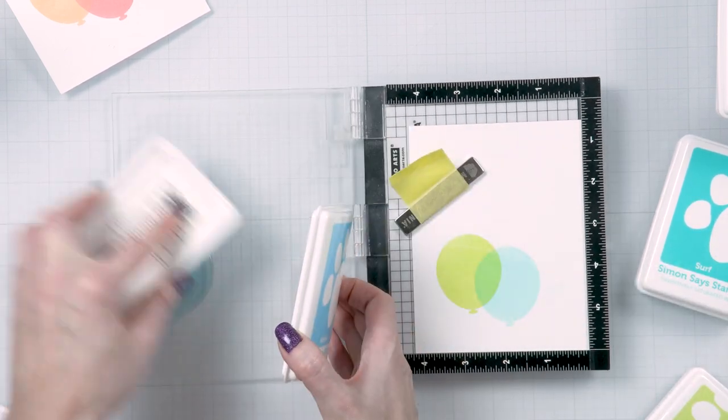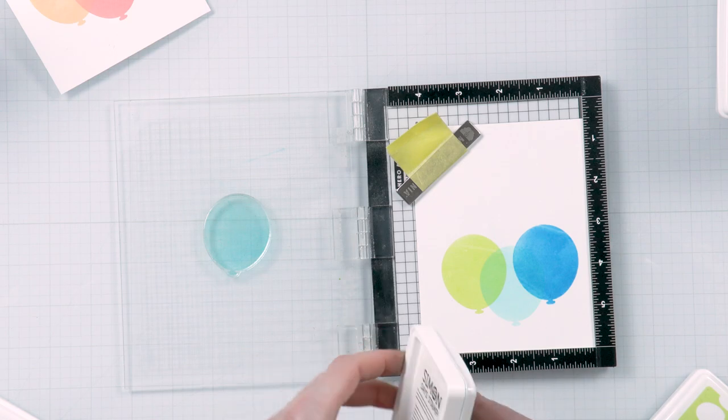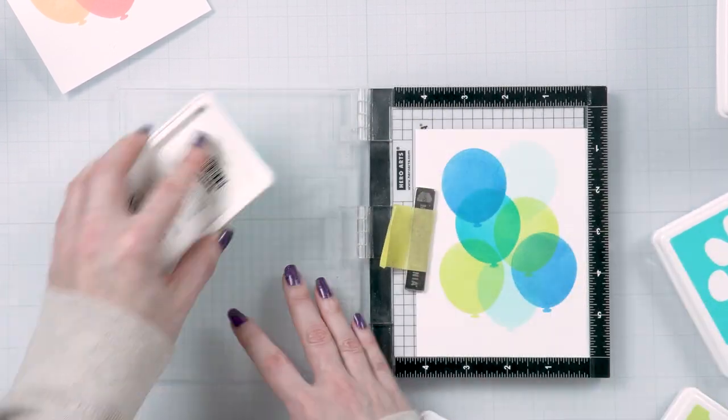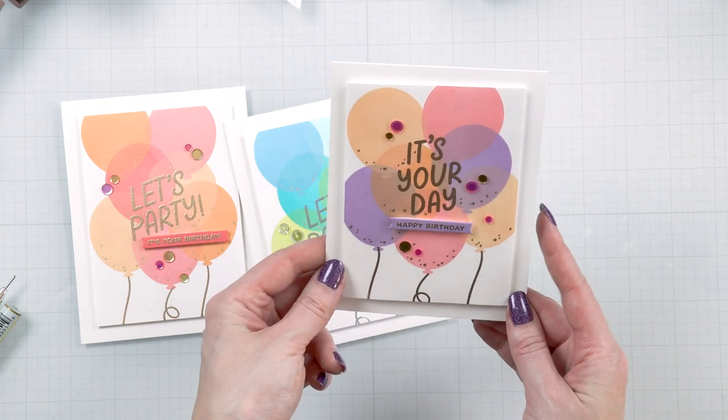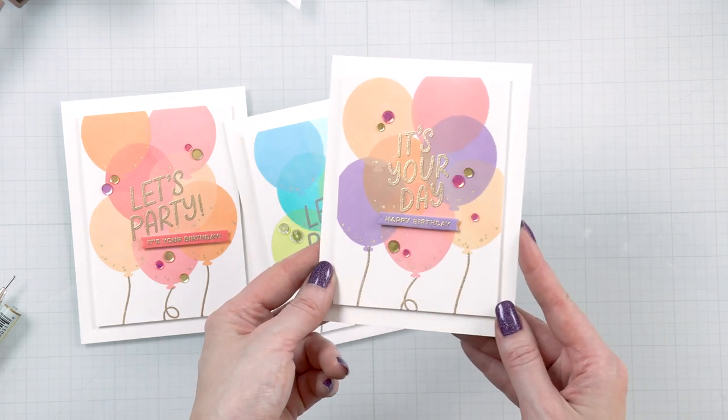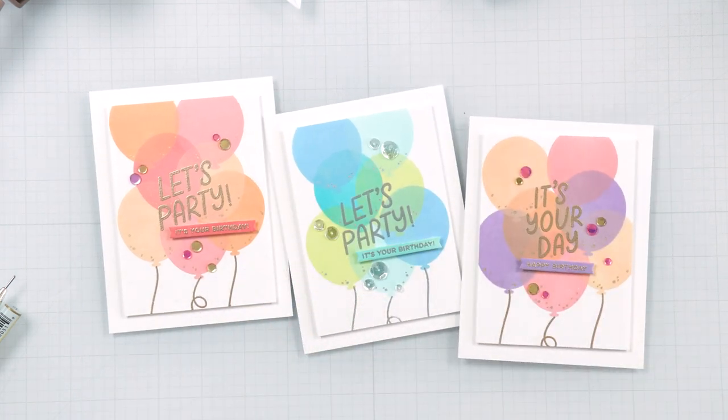Here I stamped one background using the celery, seafoam, marine, and surf ink colors. And I also made another panel by adding a bit of purple, and the colors I used were lilac, melon, cheeky, and cantaloupe.